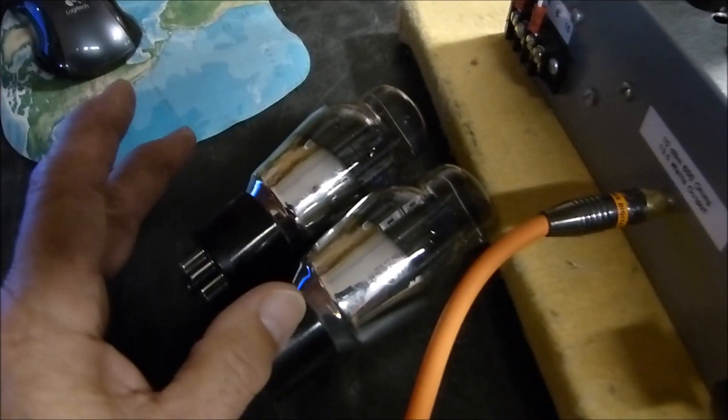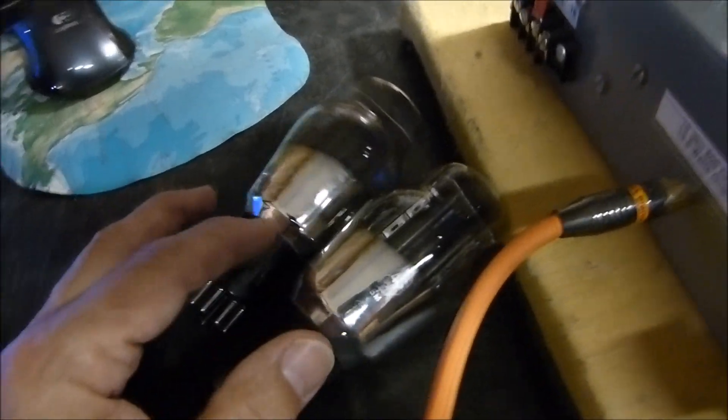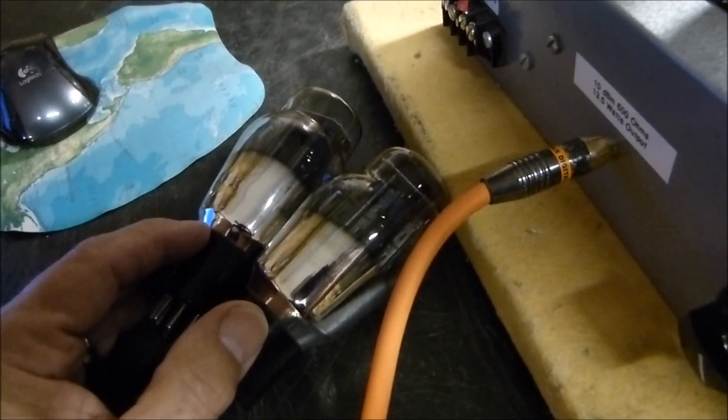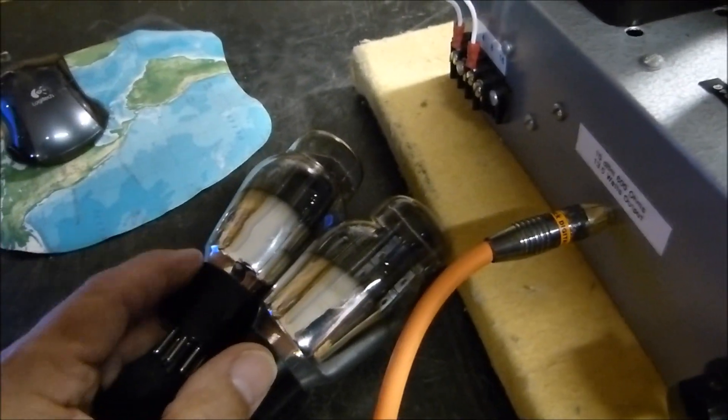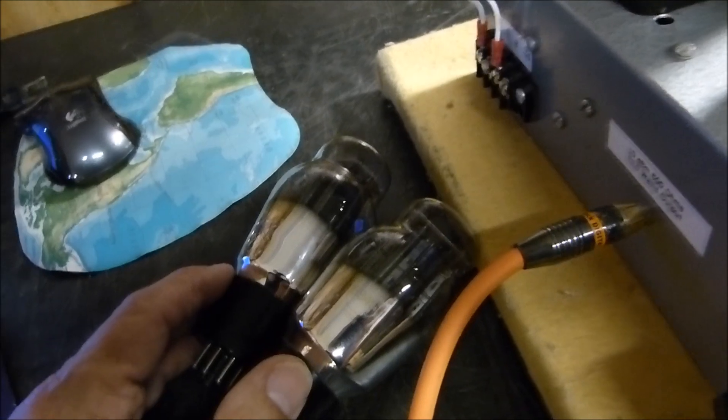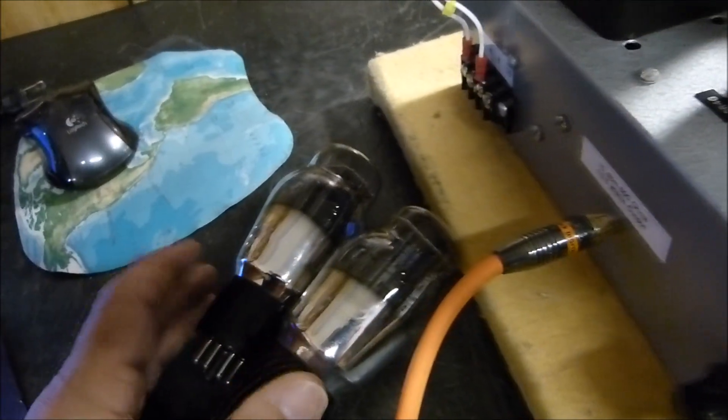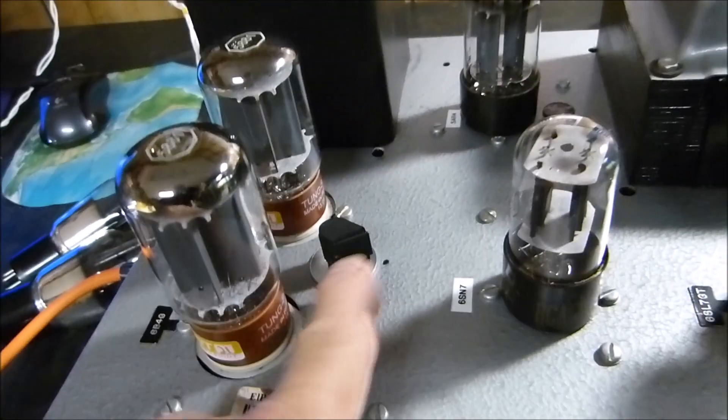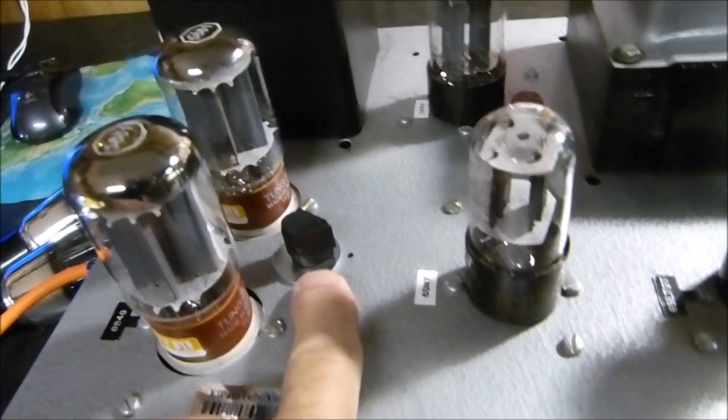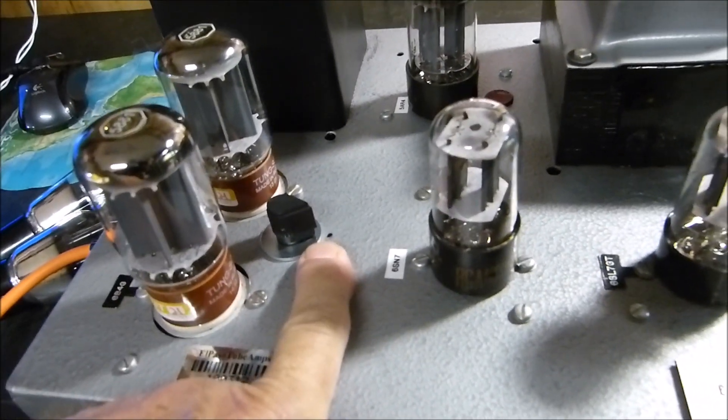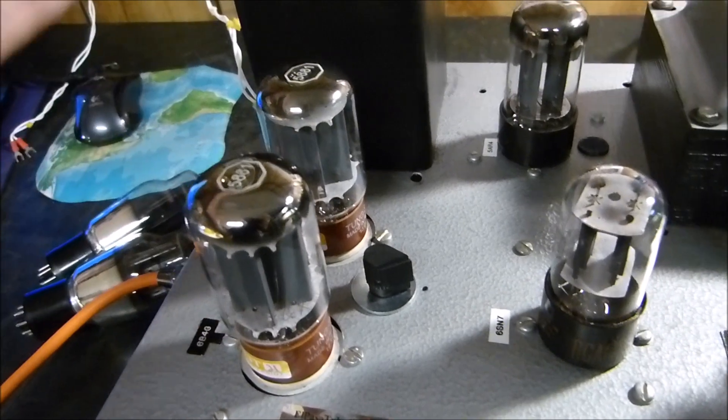These 6B4 tubes are wired the same way, but they don't have anything on pin 4 because they don't have a screen, and they don't have anything on pin 8 because they don't have that type of cathode. You have to use either a center tap or, in this case, I use a 25 ohm resistor to balance it. I can simply pull these out and put these in.